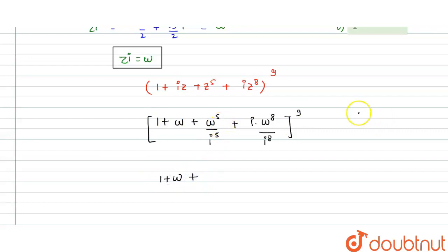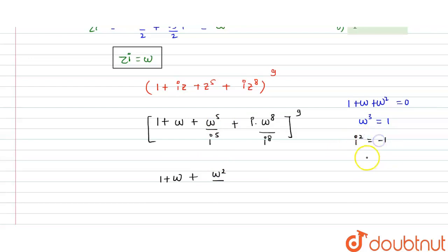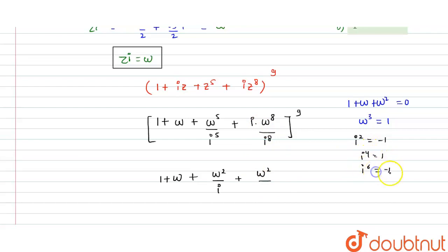Now simplify. We know 1 + ω + ω² = 0 and ω³ = 1. For ω^5/i^5: ω^5 = ω³·ω² = ω², and i^4 = 1, so i^5 = i, giving ω²/i. For ω^8/i^8: ω^8 = ω^6·ω² = ω², and i^8 = 1, giving ω²/i^8. Also i^6 = −1, and i^7 = −i. So the denominator terms simplify, leaving two terms that cancel.